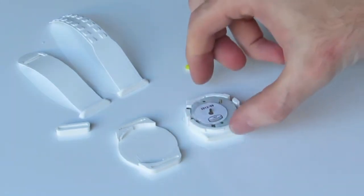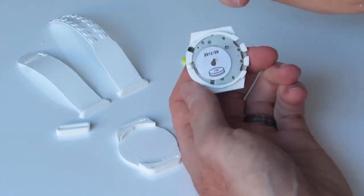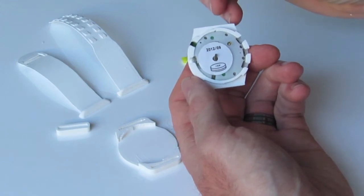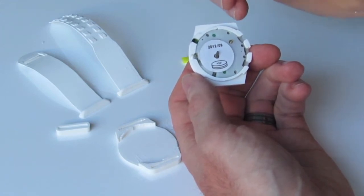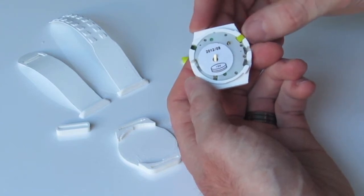Next we put in our buttons. You'll notice that on these buttons they have a little embossment on one side on the larger face. That faces towards the inside of the watch and the lower side of the watch like so. You simply slide those in like that.